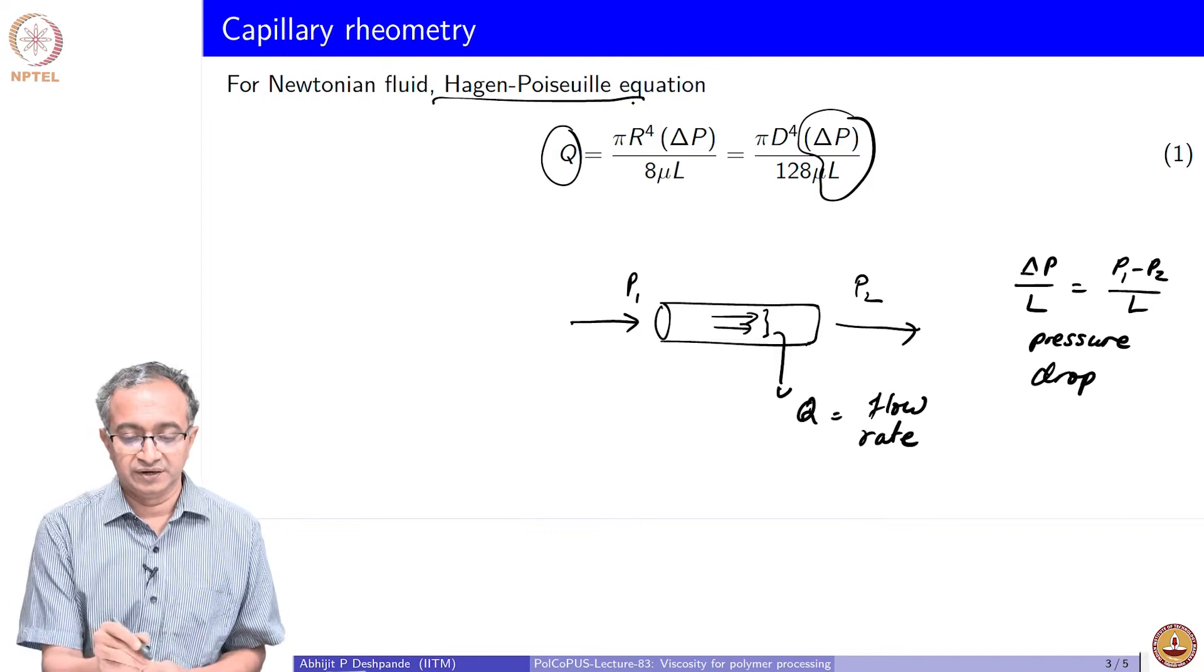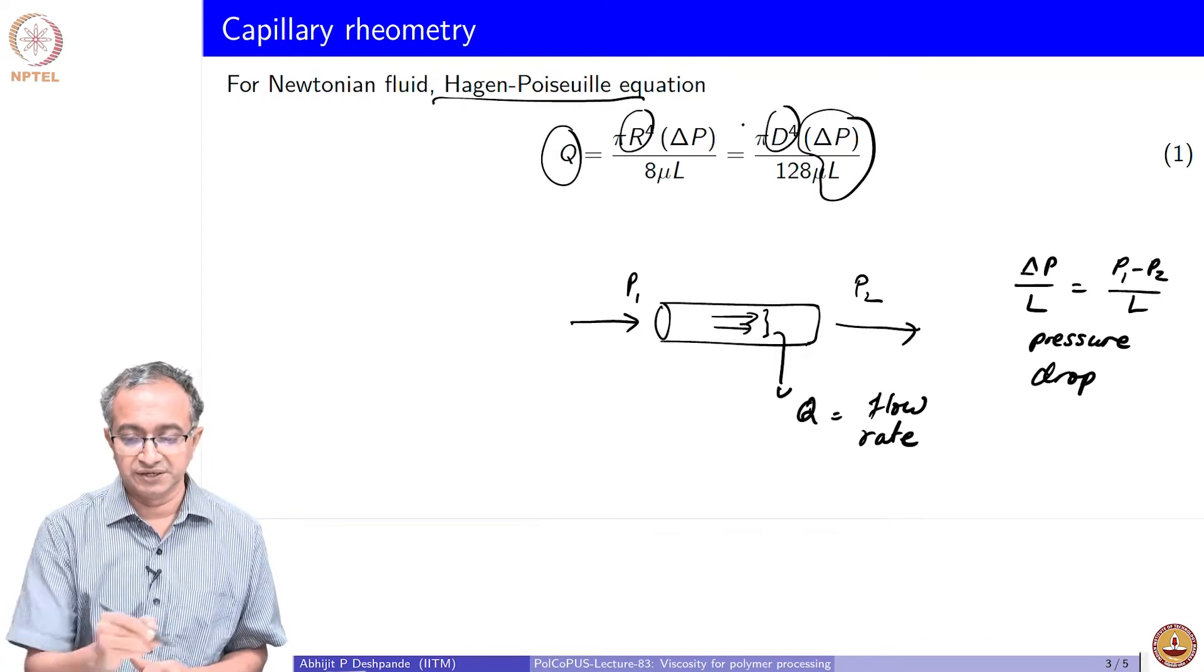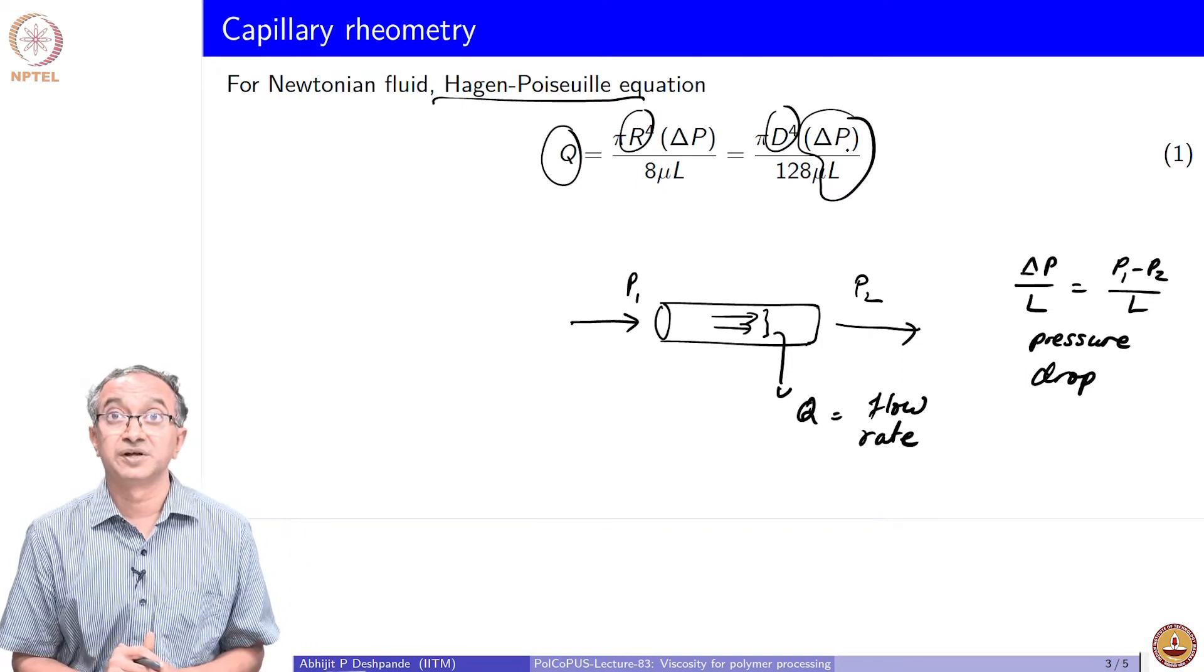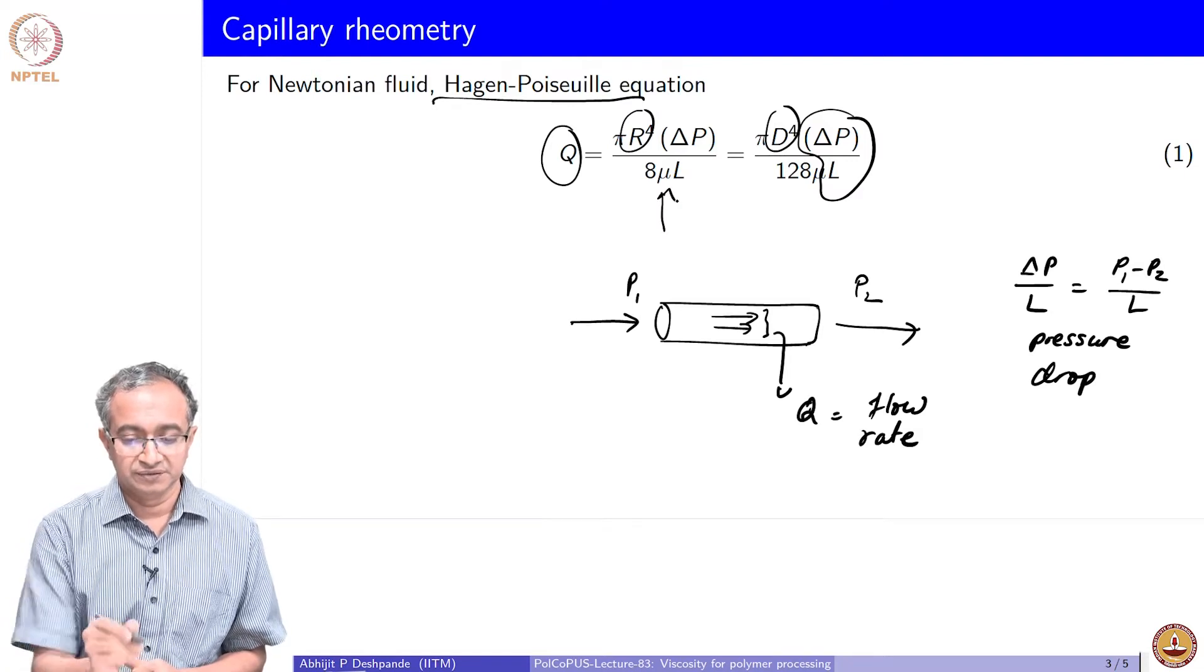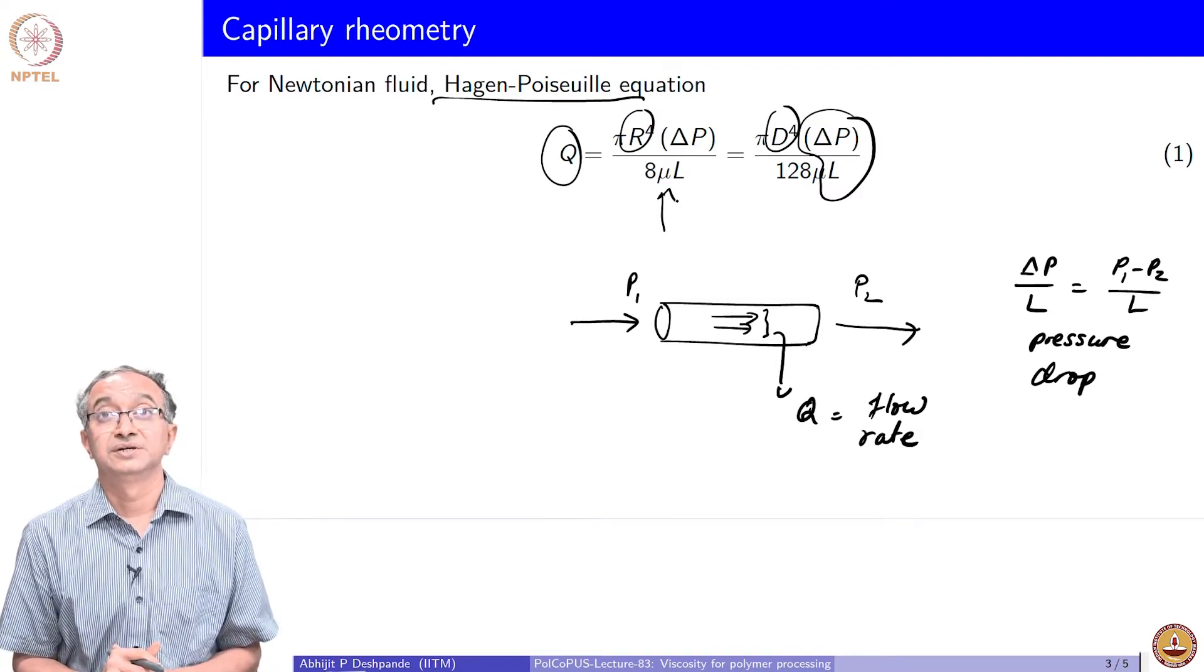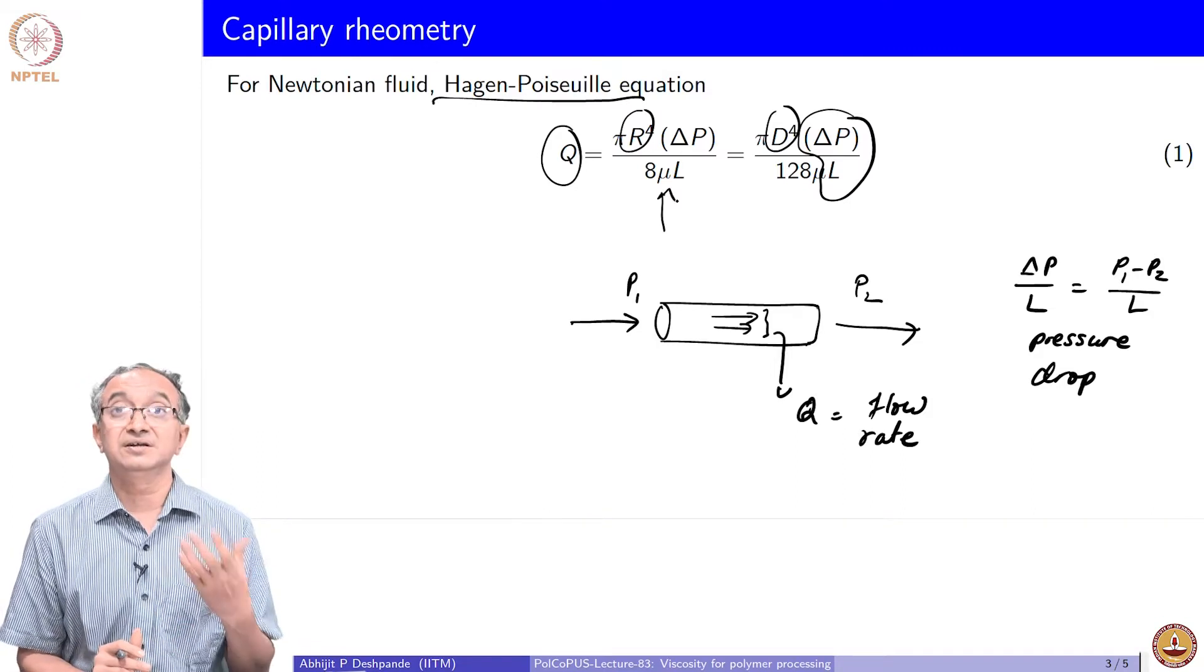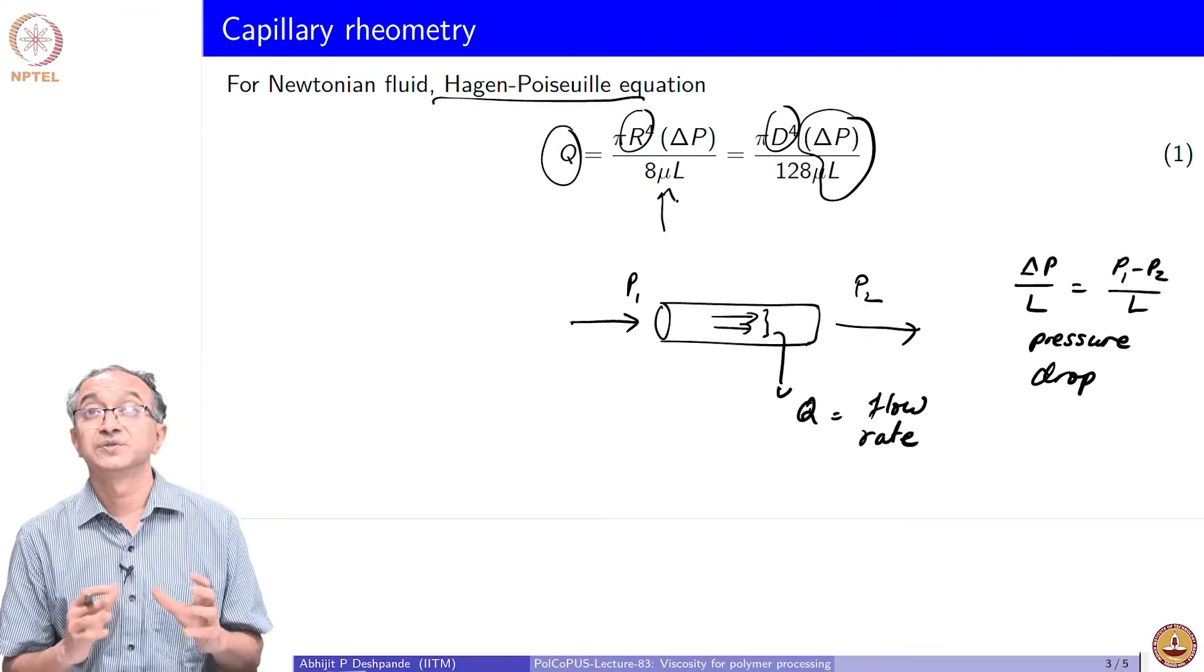If we know the capillary size, the radius or diameter, and if we know the length of the tube and the pressure drop and the flow rate we measure, then we can in fact determine the viscosity of the fluid. That is how capillary rheometry can be used to measure viscosity and in case of Newtonian fluid this is straightforward.